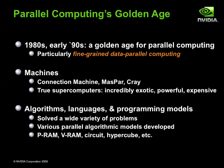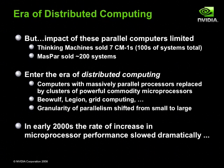Languages, programming models, and data parallel algorithms were developed that solved a wide variety of problems, as well as the design of new computer architectures. The impact from all the data parallel research was in some sense limited. The number of machines sold was relatively few, as was the number of people who programmed them.